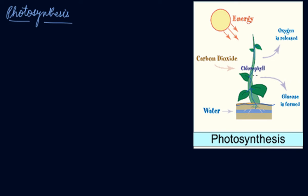These leaves have a green pigment called chlorophyll. These leaves also have tiny pores called stomata, which are guarded by the guard cells. What do stomata do? Stomata intake carbon dioxide from the air through these pores.